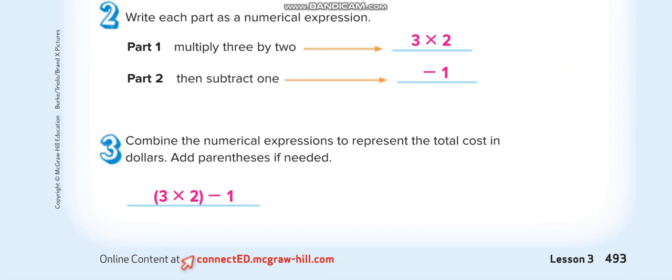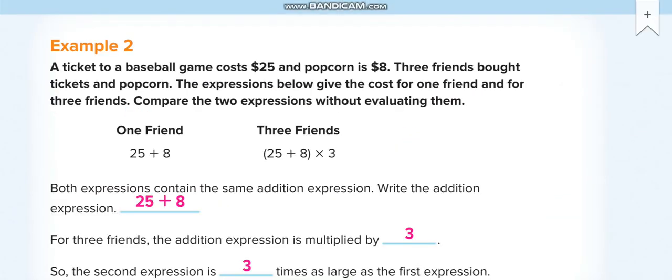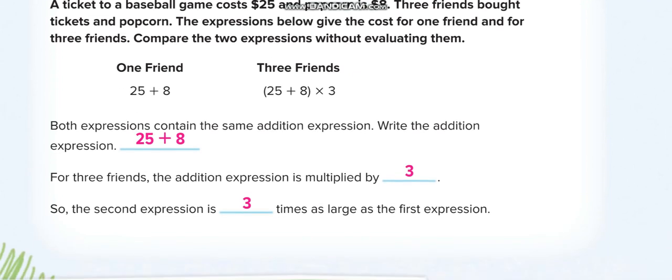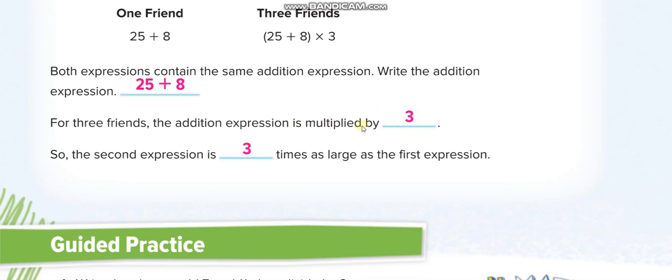Next one here. A ticket to a basketball game cost $25 and popcorn is $8. So what is the total cost? 25 plus 8, 33. Now three friends want to go, so you will multiply 3 by 33. And how you write the numerical expression? For one friend, 25 plus 8. And for three friends, multiply this by 3. So this is the way of writing, multiplied by 3. This is our expression.